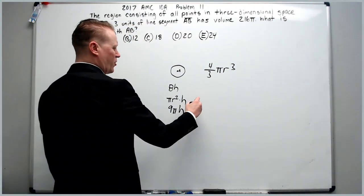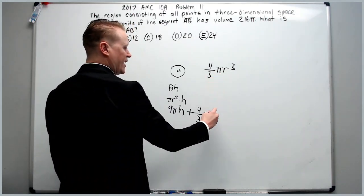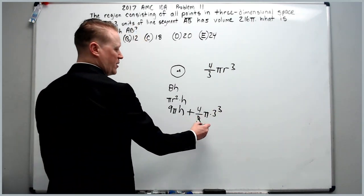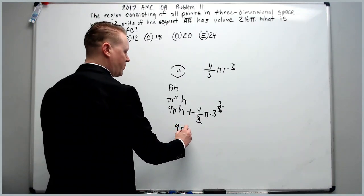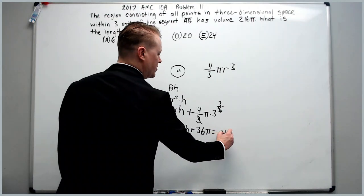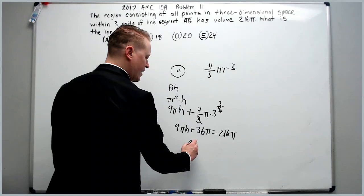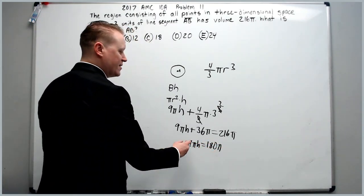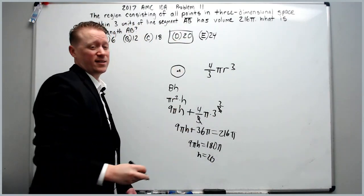We're going to add 4/3 π r³. So 9πh + 36π = 216π. If you subtract 36, you'll get 9πh = 180π. Divide by 9π to get h = 20.